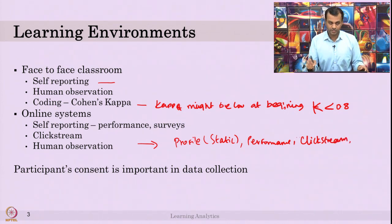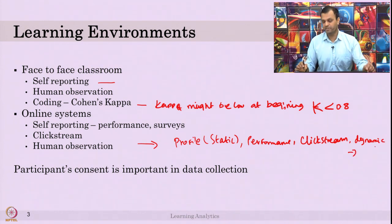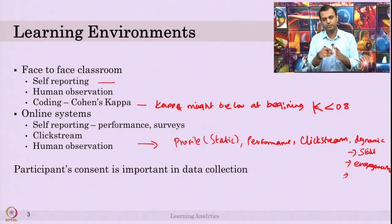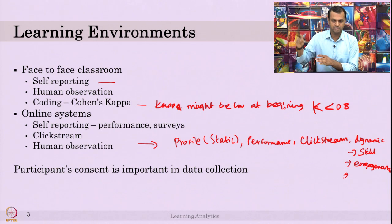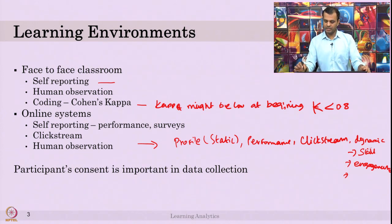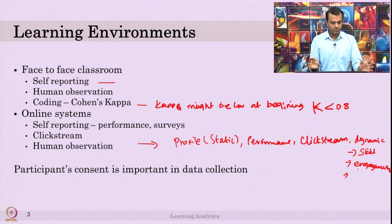By combining clickstream data and performance, you come up with dynamic data — you might be measuring skill or engagement. It is dynamic because at the beginning you start with a median value, then based on students' clickstream and performance you change it: if a student is performing well and interacting with all artifacts in the system, you increase the engagement score. If they are not interacting, you reduce it. This dynamic data is used to provide new feedback or new content — that is the idea of intelligent tutoring systems.